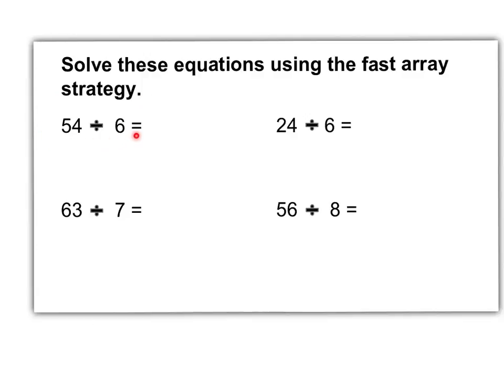54 divided by 6 equals. 63 divided by 7 equals. 24 divided by 6 equals. And, 56 divided by 8 equals. And, I need you to write the fast array strategy to show how you would get the answer for all four of these equations. And, you need to hand this sheet into your teacher when you are finished.